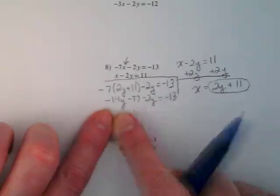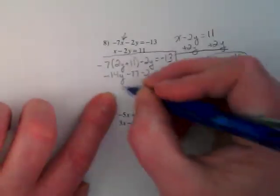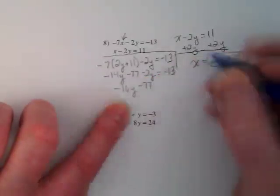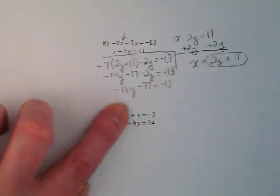I have negative 14y and negative 2y that are like terms. When I combine them I'm going to get negative 16y minus 77 is equal to negative 13. Our next step is going to be to move that negative 77, right? What's the opposite of negative 77? Yep, so I'm going to add 77 to both sides.